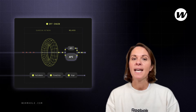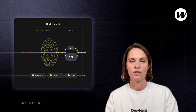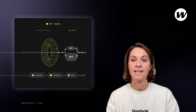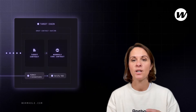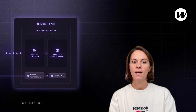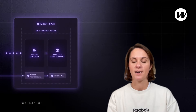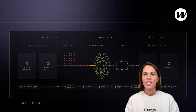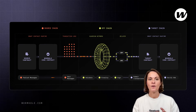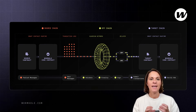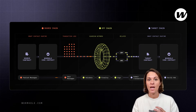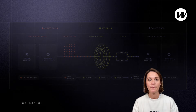Then the final step: the relayer sends the message to the target chain contract. A transaction is considered final when it has reached a certain level of finality on the blockchain network it was initiated on. We call this the consistency level in the Wormhole protocol. Different blockchain networks use different consensus mechanisms, so they all have different finality assumptions. When you would expect finality to happen on Ethereum versus Solana, that is a different time. Now that you have a solid overview of Wormhole, let's start coding.